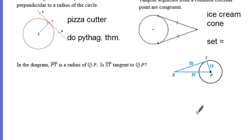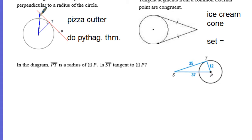Looking at two types of problems: one I call the pizza cutter, the other the ice cream cone. The property is that a line is tangent if and only if the line is perpendicular to a radius of the circle. Most times we see this, we end up drawing a right triangle — it looks like the handle of a pizza cutter. Most pizza cutter problems require Pythagorean theorem.